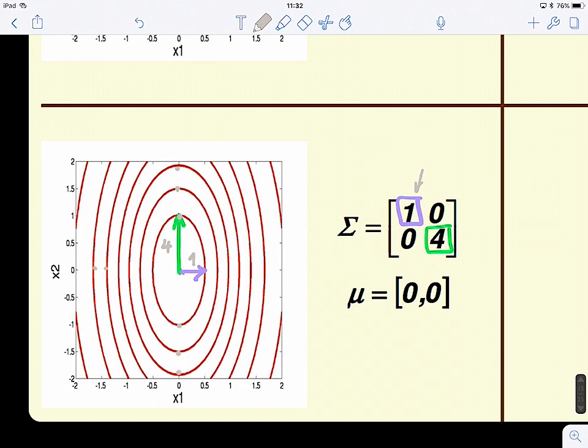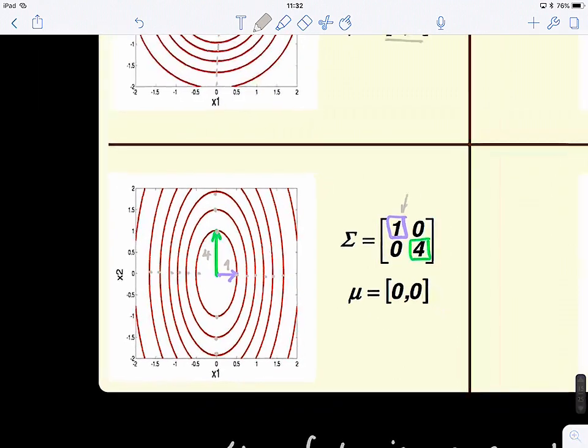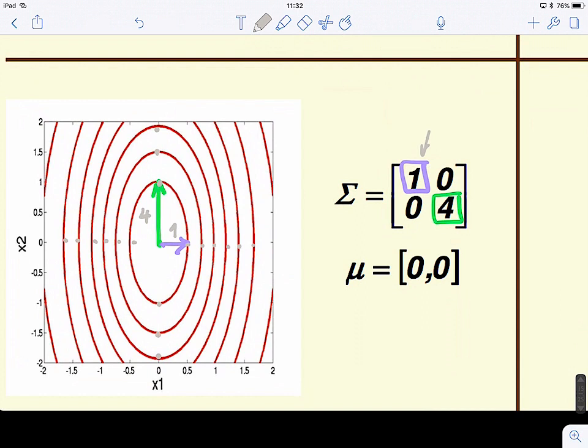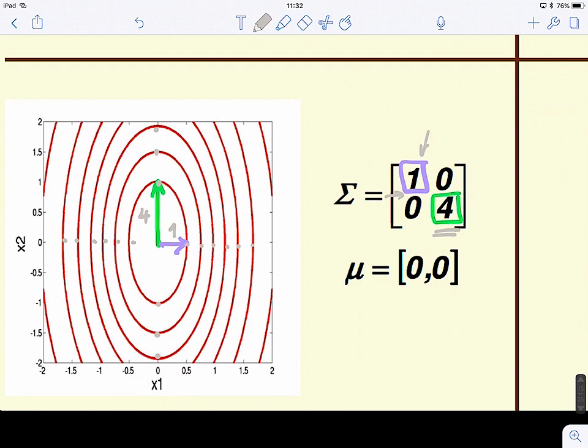These ones are like quite closer, right? So the scatteredness or the spread of the data along the X2 direction is higher than along the X1 direction.